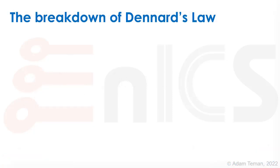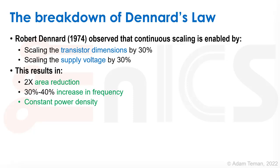I want to start by discussing the breakdown of Dennard's law. Robert Dennard was one of the great engineers at IBM — he actually invented the DRAM as we know it today. In 1974 he wrote a paper observing that continuous scaling is enabled by scaling transistor dimensions by 30% and scaling the supply voltage by 30%, which produces some useful effects.